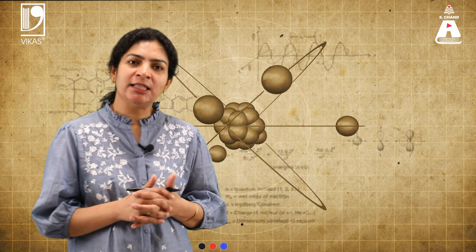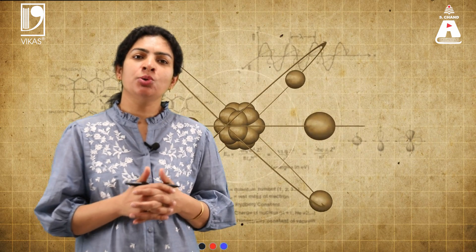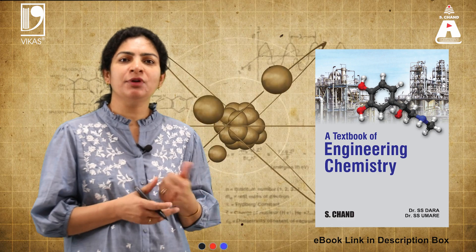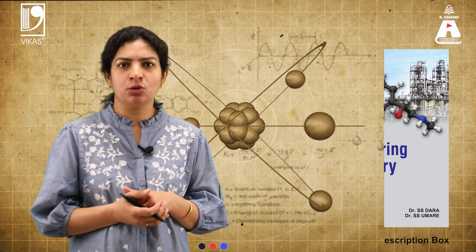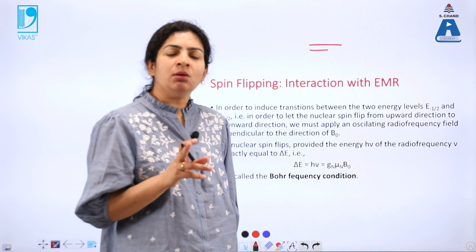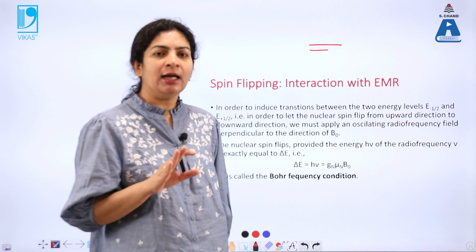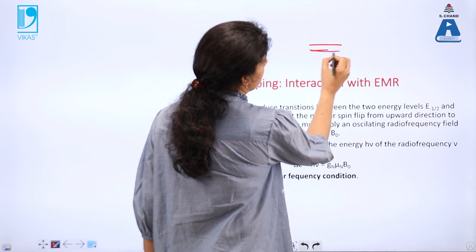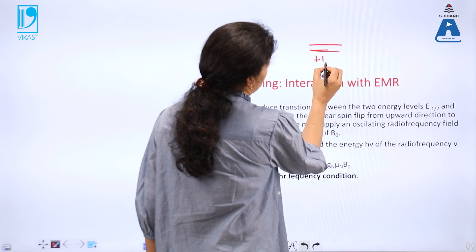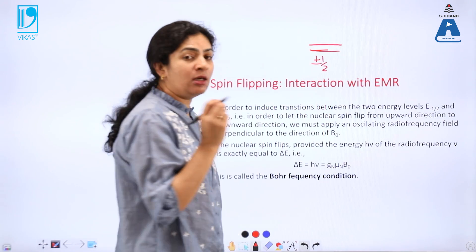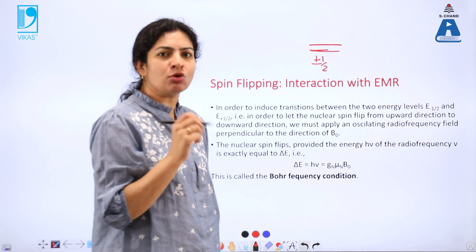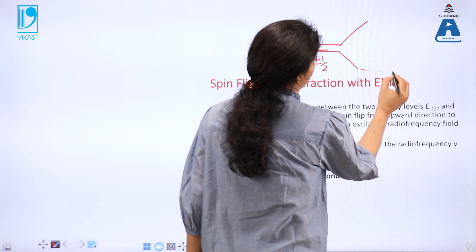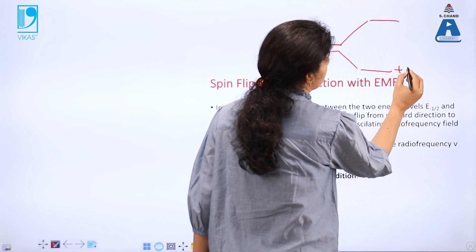To read about these topics in detail you can refer to the book by S. Chan — the link is given in the description box. In the previous section we understood that the two degenerate states, which existed in the absence of an external magnetic field, are now split into two energy levels.